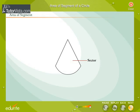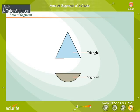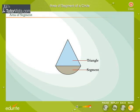Observe the sector of a circle. It consists of two parts: one part is a triangle and the other part is a segment. Area of the sector is equal to area of the triangle plus the area of the segment. So, the area of the segment is found by subtracting the area of the triangle from the area of the sector.